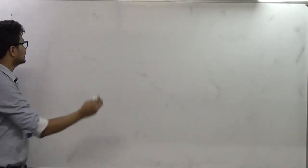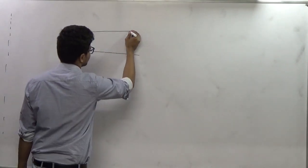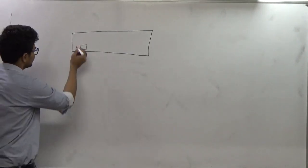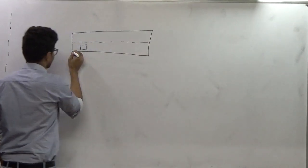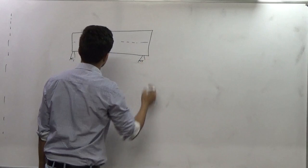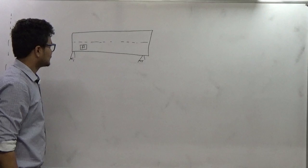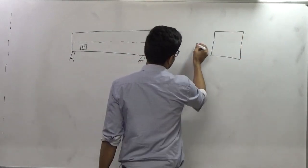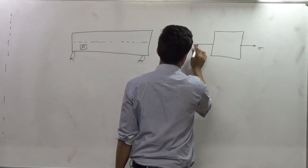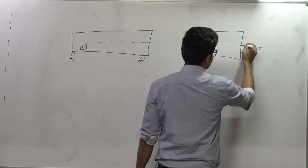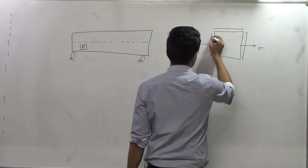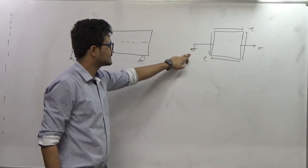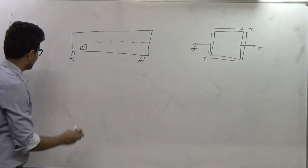Now we will start our analysis part. Let's take a simply supported beam, and consider an element below the neutral axis — let's say this is element A. If I draw the free body diagram of this element, since it is below the neutral axis, tensile stresses will be acting and shear stress will also be acting. I assume the bending stress acting is given by sigma and the shear stress is given by tau.